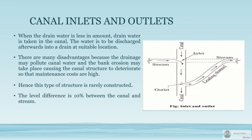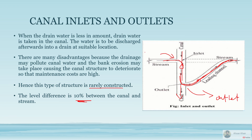Inlets and outlets are another type, though usually avoided and rarely constructed. The main concept is that water from the stream enters the canal, mixes with it, moves forward, and is then allowed to go out and rejoin the stream downstream. Because it mixes with the canal water it can pollute it, so there are many disadvantages. Usually this is avoided and water is entered through a leading channel to the stream. This is the canal inlet and outlet concept.